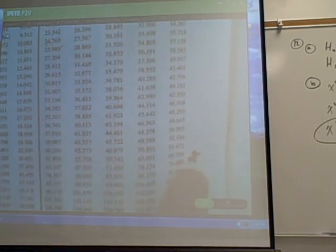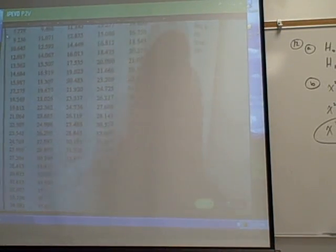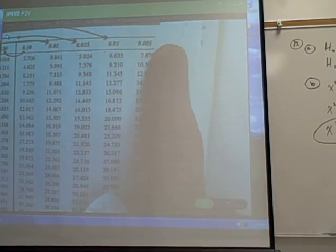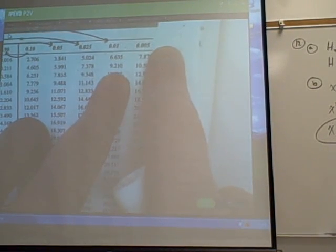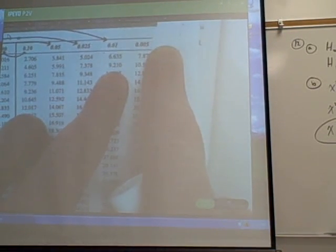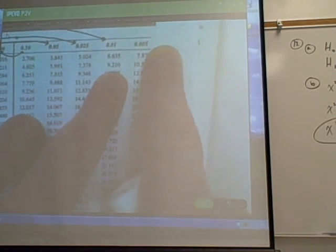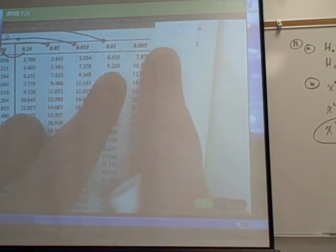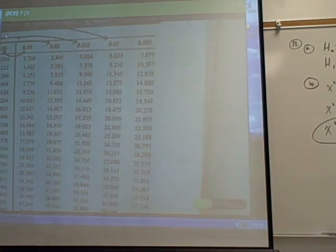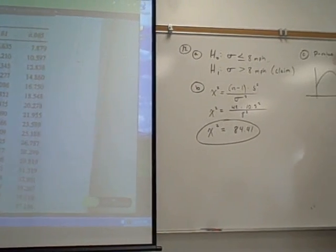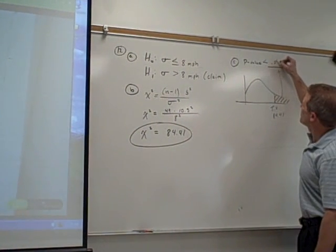84.41 would be out here somewhere. Let me move that chart over for you. 84.41 would be out here. So then you go up, look at the top, your p-value would be up here. And as you look across this chart, I see .10, .05, .025, .01. These numbers are getting smaller. My p-value would be to the right. So my p-value is going to be smaller or bigger than .005? Smaller. Yep. As these numbers get smaller, the p-value would be smaller than .005. So I don't really know what it equals, but I do know it's going to be less than .005.